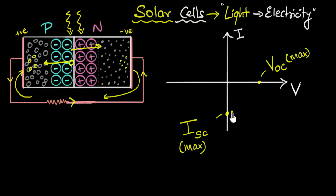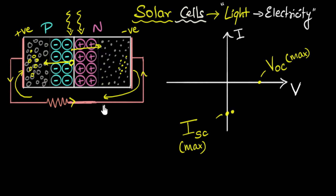If I increase that resistance a bit more, I require more voltage to push the current through it, so more charges accumulate, the potential difference increases further, the repulsion increases, the charges slow down, and the current reduces even more. As resistance increases, voltage keeps increasing and current keeps decreasing. This traces out our IV curve, which looks like the characteristic shape of a solar cell sweeping through the fourth quadrant.